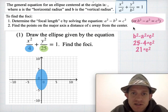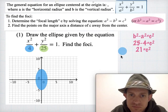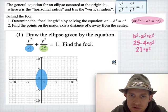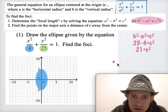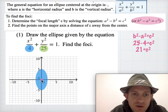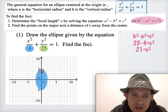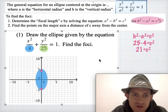So the focal points are 4.58 units away from the center. Since the major axis is vertical, we go up 4.58 units from the center — which puts us almost at the vertex — and down 4.58 units below the center. So those are our two focus points.